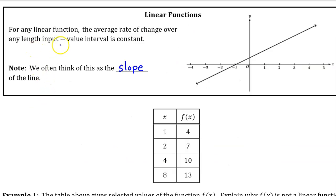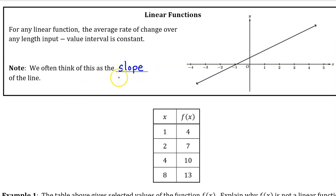For a linear function, the average rate of change over any length input value interval is a constant, and we often think of this as the slope of the line.